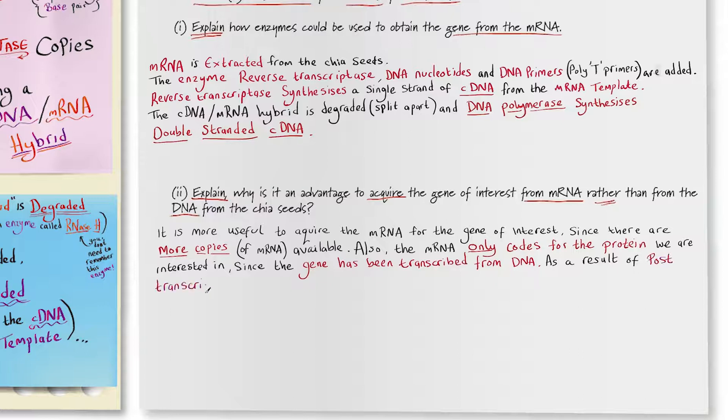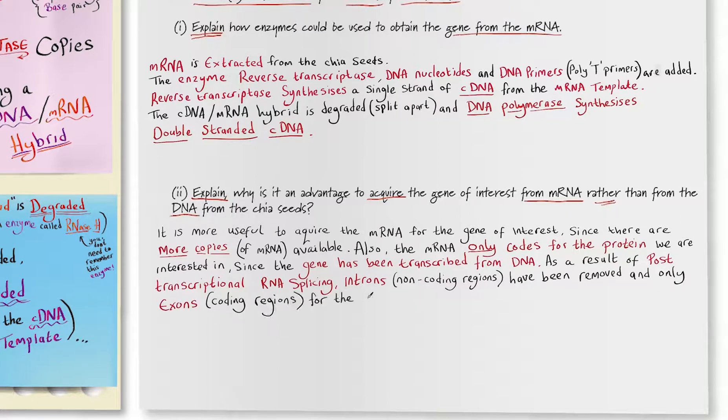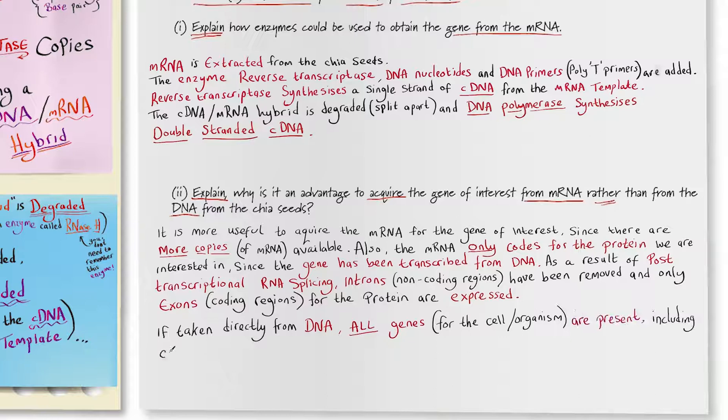As a result of post transcriptional RNA splicing introns or non-coding regions have been removed and only exons the coding regions for the protein are expressed. If taken directly from DNA all genes for the cell or the organism are present including coding and non-coding regions of the gene.